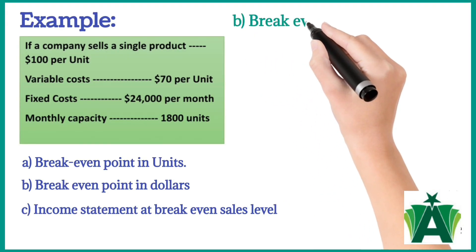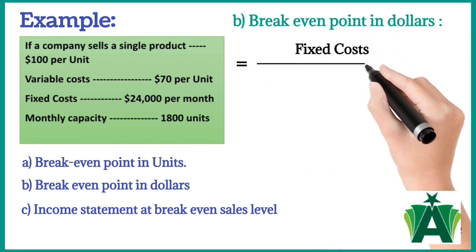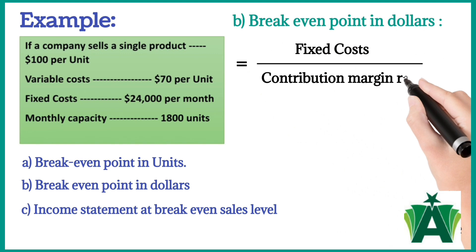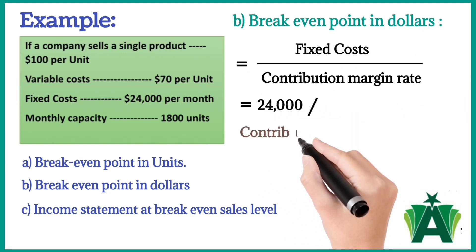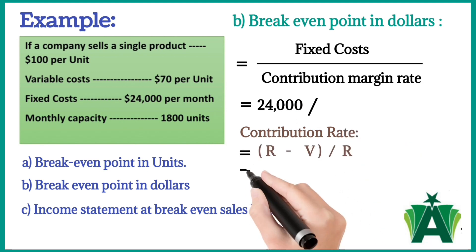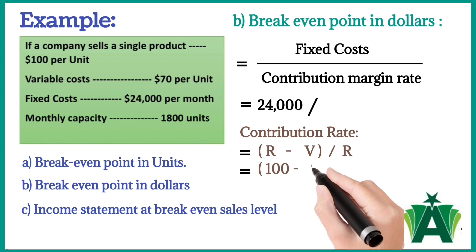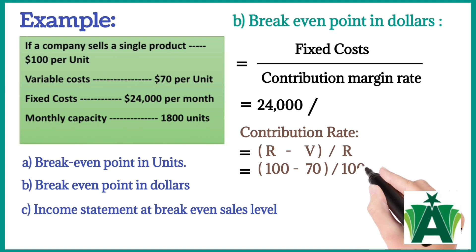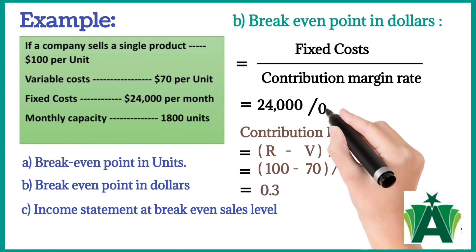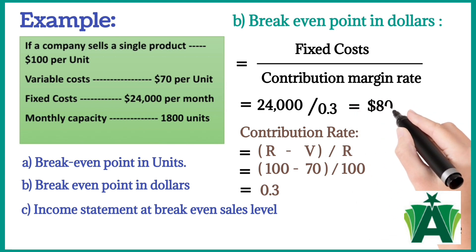Now we calculate break-even point in dollars: fixed costs divided by contribution margin rate. Fixed costs is $24,000. The contribution margin rate is not given, so it is calculated as revenue per unit ($100) minus variable costs per unit ($70), divided by revenue per unit ($100), giving a contribution margin rate of 0.3. The break-even point in dollars is $80,000.